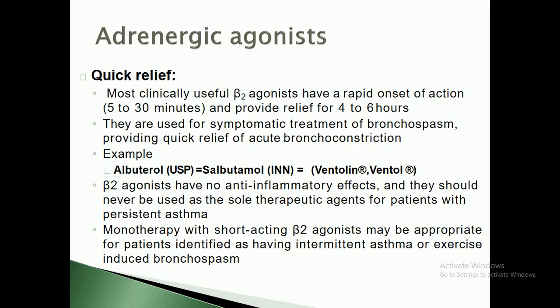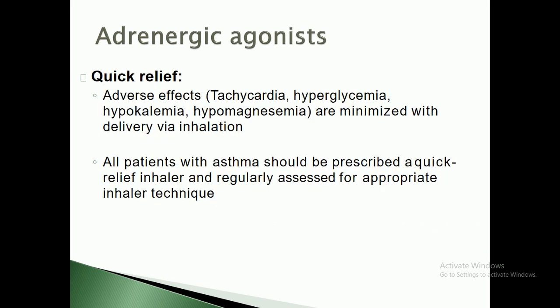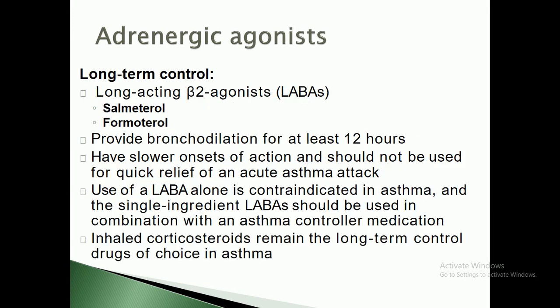Beta-2 agonists have no anti-inflammatory effect and should never be used as the sole therapeutic agent for patients with persistent asthma. Monotherapy with short-acting beta-2 agonists may be appropriate for patients identified as having intermittent asthma or exercise-induced bronchospasm. Adverse effects of adrenergic agonists include tachycardia, hyperglycemia (increased glucose concentration in the blood), hypokalemia (potassium depletion — low potassium level in blood), and hypomagnesemia (low magnesium level in blood), though these are minimized when delivered via inhalation. All patients with asthma should be prescribed a quick relief inhaler and regularly assessed for appropriate inhaler technique.